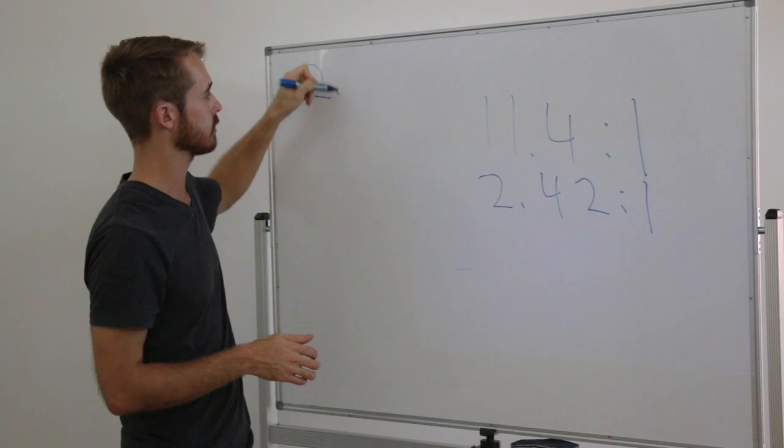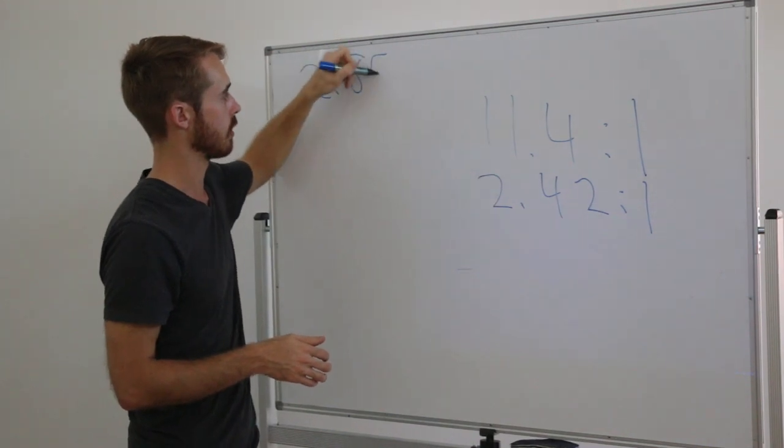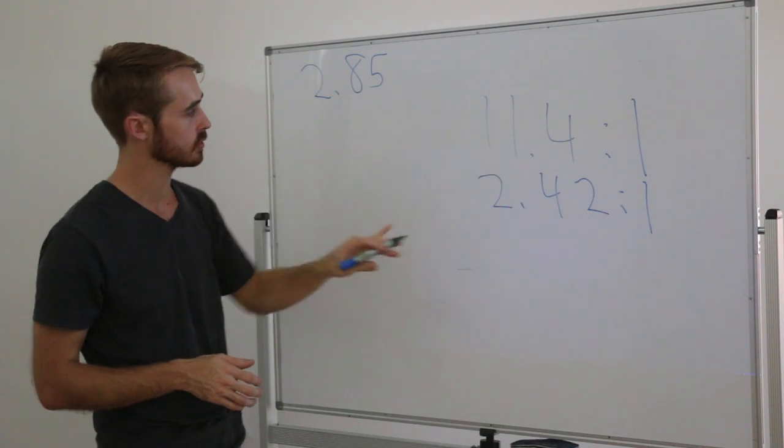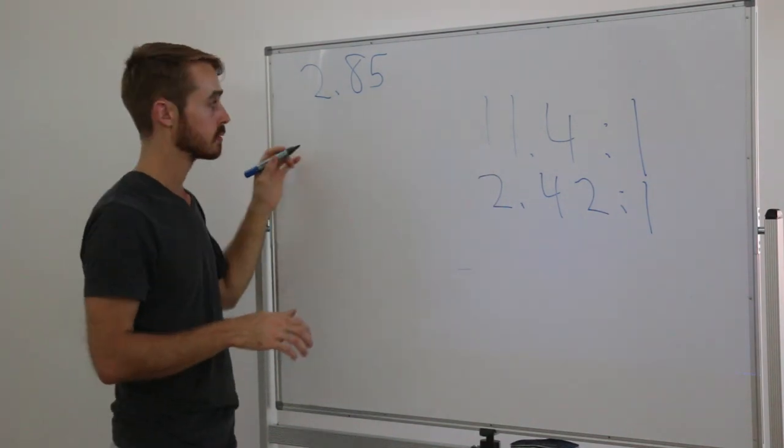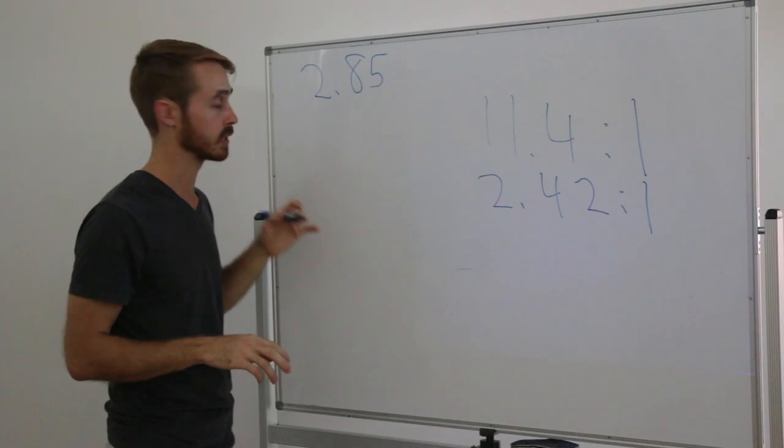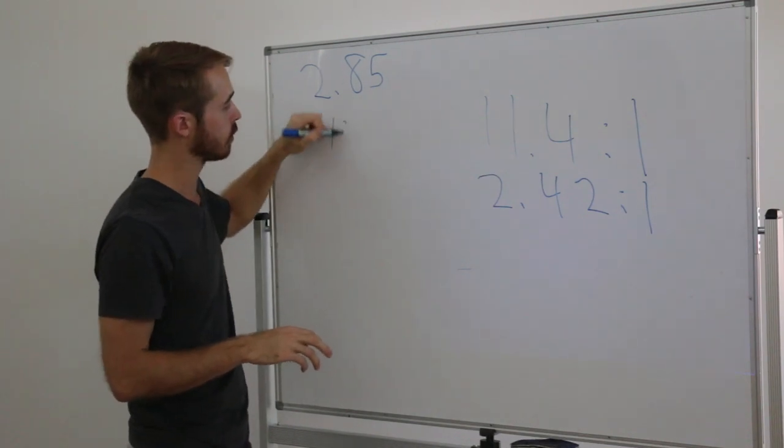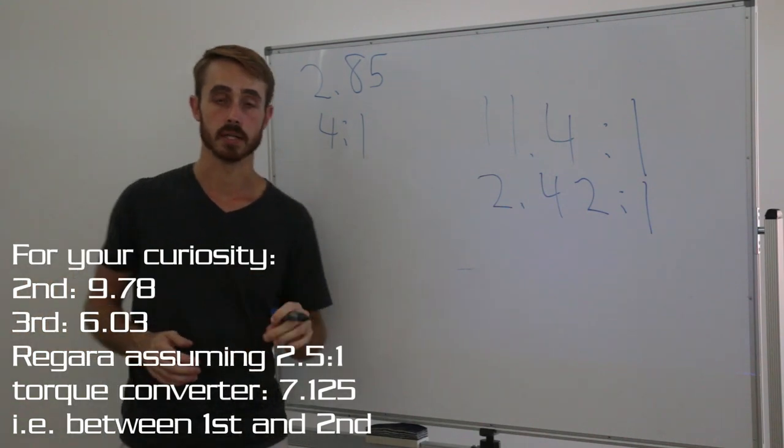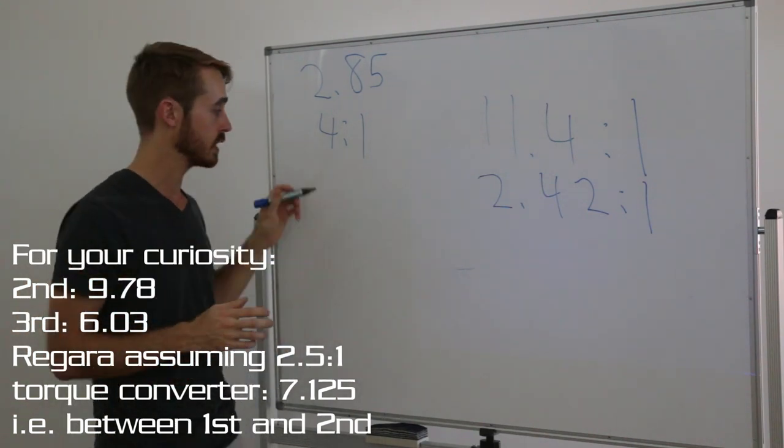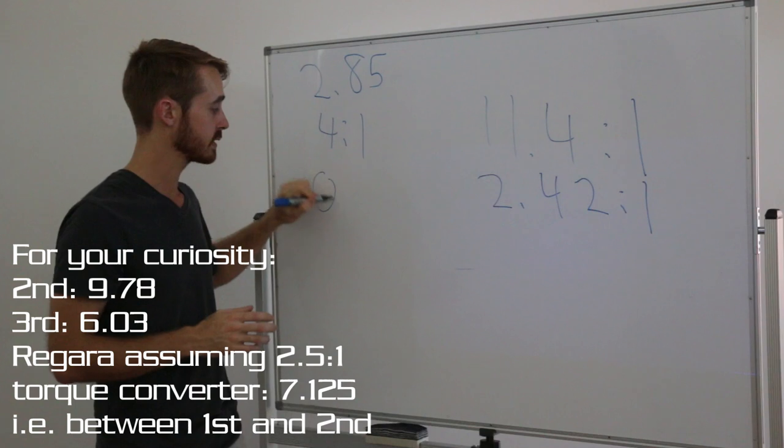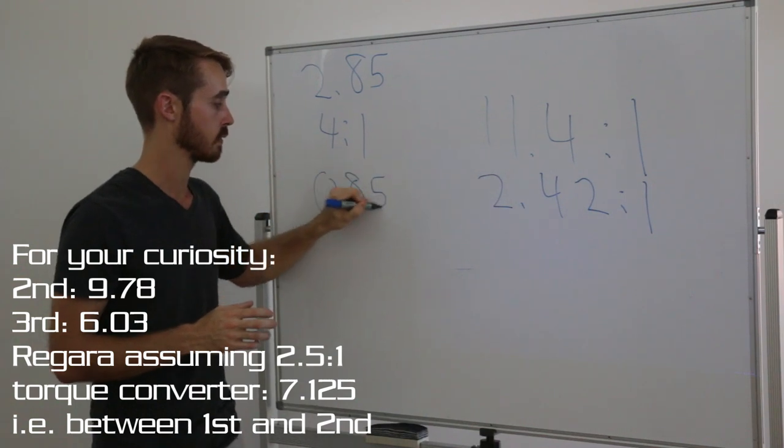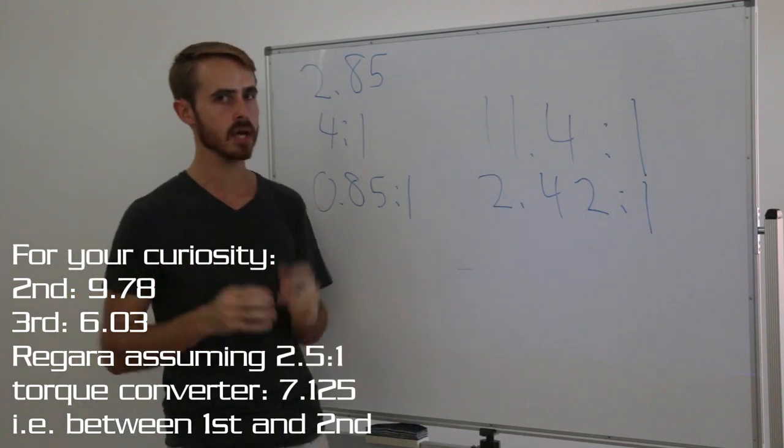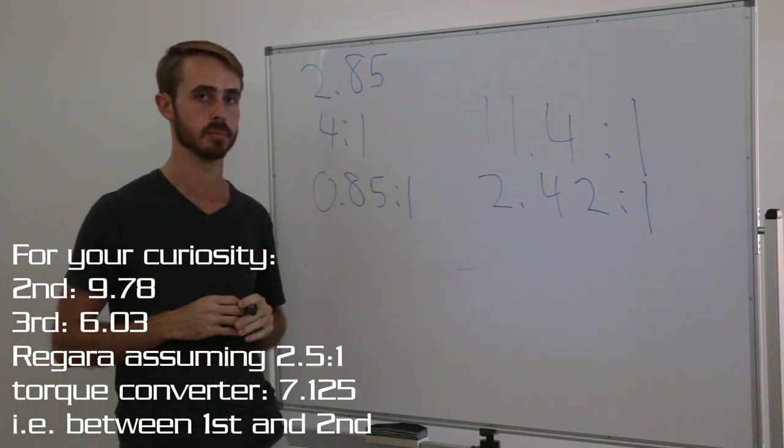If we take our final drive ratio on the Regera of 2.85 to 1, we can see that to reach these ratios here, we need an effective first torque reduction ratio through our torque converter of 4 to 1. To reach our effective 7th gear with the torque converter reduction, we need to have an effective ratio of 0.85 to 1, which is slightly overdriven, which is not ideal for a torque converter. They usually prefer to be 1 to 1 at tops.